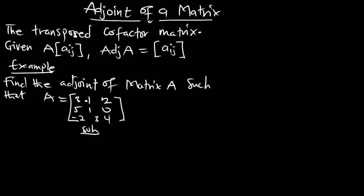We know how to find the cofactor matrix. We are going to write out a large bracket for the cofactor matrix of A. For the first element, the first row and first column are removed, giving us the 2x2 matrix: 1, 0; 3, 4.